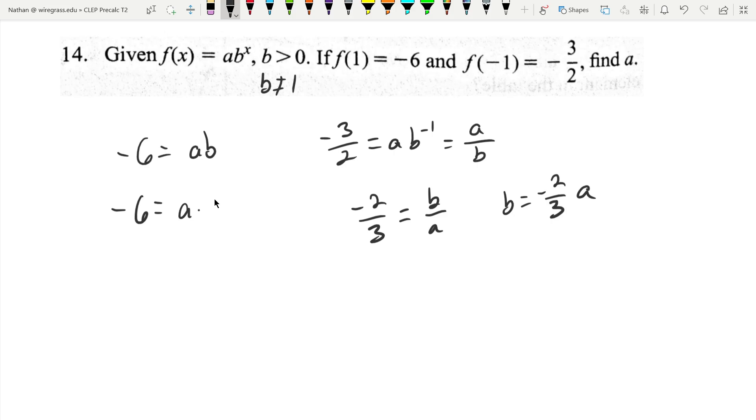a times negative two-thirds times a. Multiplying by three over negative two on the other side, negatives cancel, divided by two is three, three times three is nine equals a squared. Taking the square root is going to give...